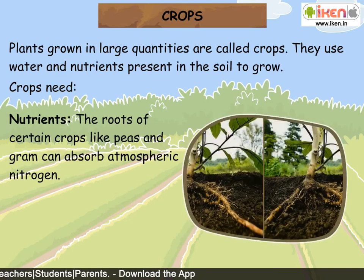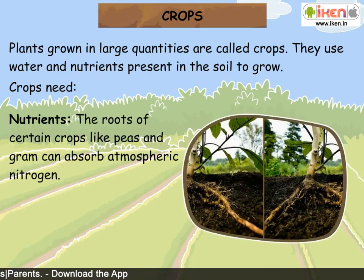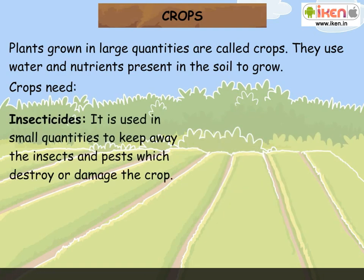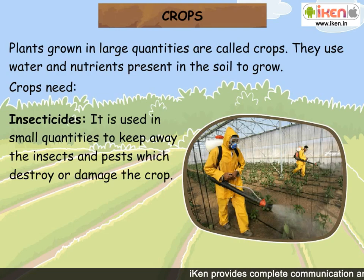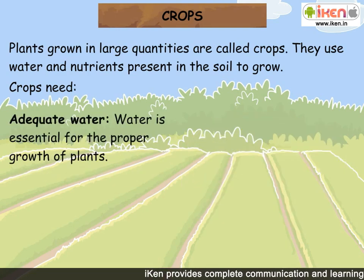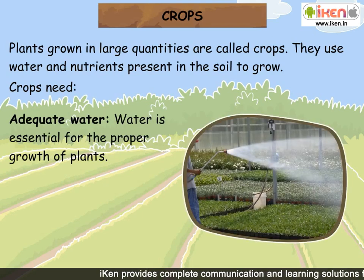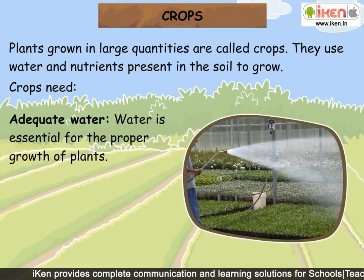The roots of certain crops, like peas and gram, can absorb atmospheric nitrogen. Insecticides are used in small quantities to keep away insects and pests which destroy or damage the crop. Adequate water is also essential for the proper growth of plants.